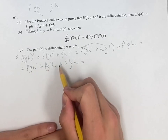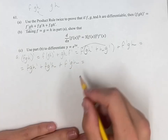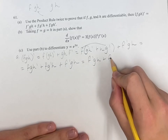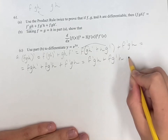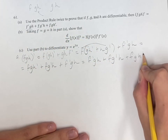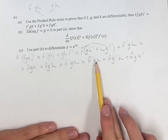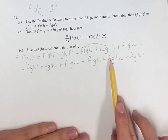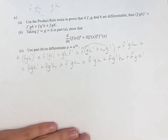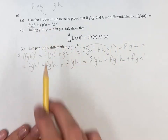Now we're adding these three terms and I'm going to rearrange them — not actually change anything, just rearrange them into the order that they are in the given expression, which is basically swapping two of them. This gives us f prime gh plus fg prime h plus fgh prime. So this has proved the statement that we were asked to solve in part A.